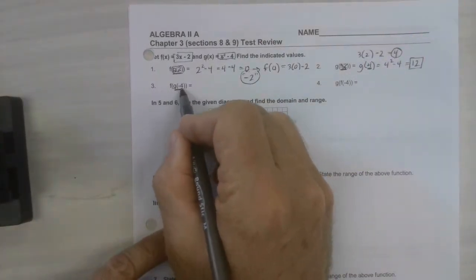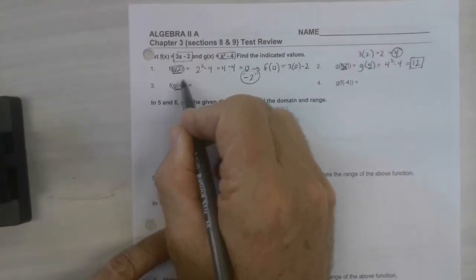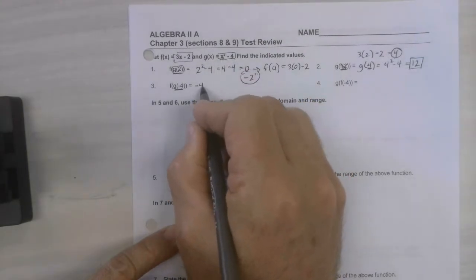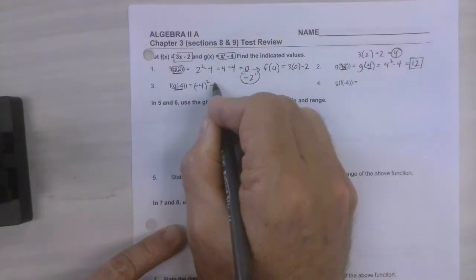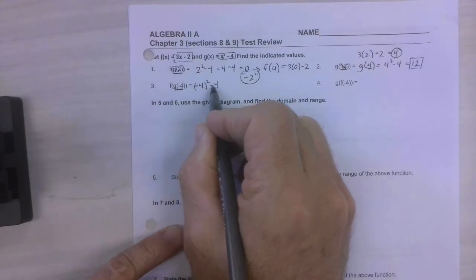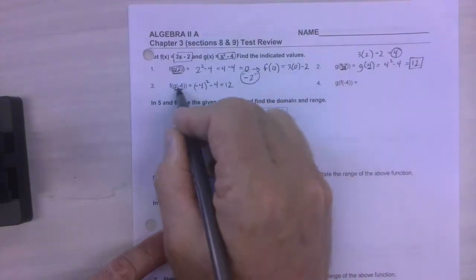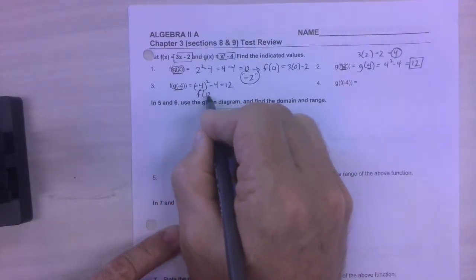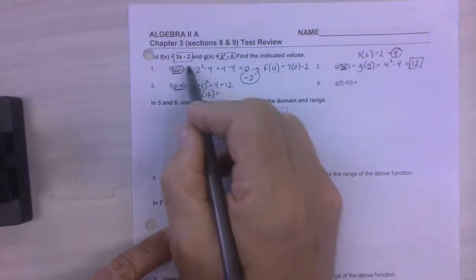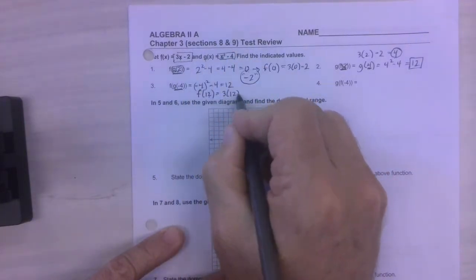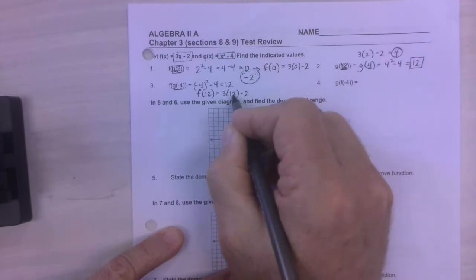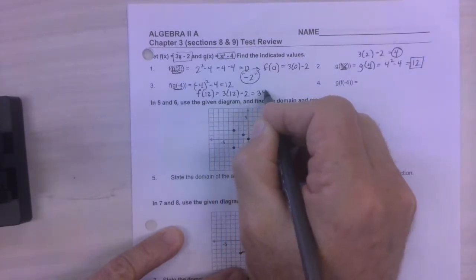Now we're going to put negative 4 into the equation defined by g to get started. So that'd be negative 4 squared minus 4, which is 16 minus 4, which is 12. So now we need to find f of 12, which means we put the 12 right there. So it's 3 times 12 minus 2, which is 36 minus 2, which is 34.